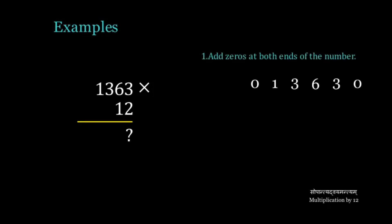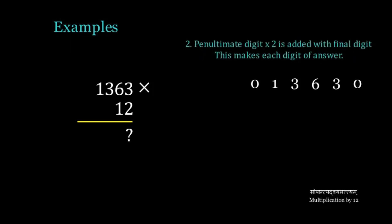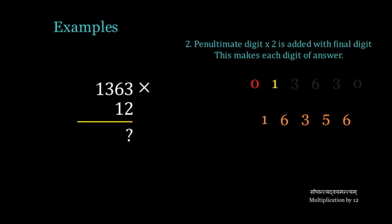1363 multiplied by 12. Adding zeros at both ends, we get 0, 1, 3, 6, 3, 0. The penultimate digit is 3. Double of 3 is 6, plus 0 is 6. Double of 6 is 12, plus 3 is 15 — we write 5 and carry 1. Double of 3 is 6, plus 6 is 12, plus 1 is 13 — we write 3 and carry 1. Double of 1 is 2, plus 3 is 5, plus 1 is 6. Then 0 plus 1 is 1. So 1363 multiplied by 12 is 16356.